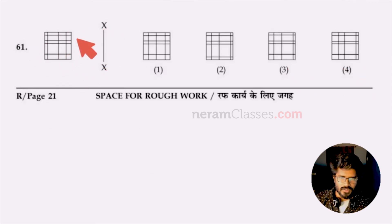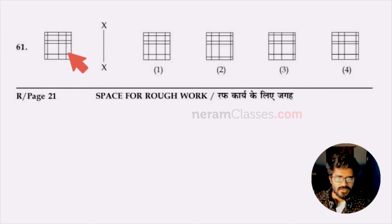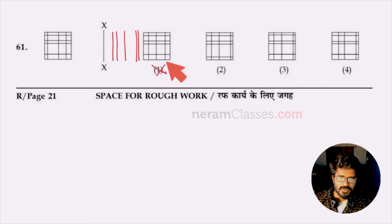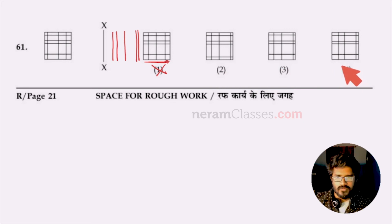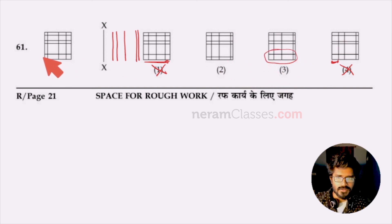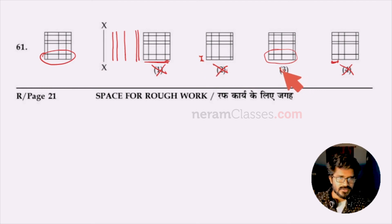Question 61: find the correct mirror image based on the given axis. Drawing vertical lines: the first should be very close/short, then slightly larger, then very large, then large again, then very small. Options one is wrong — the lines look equal. Option four is wrong — the first row is too large. The answer is between two and three: option two has too little height at the bottom row, but option three matches correctly. Option three is the right answer.